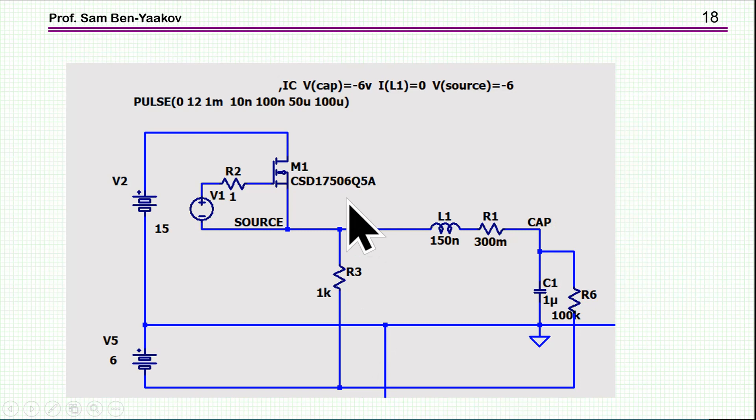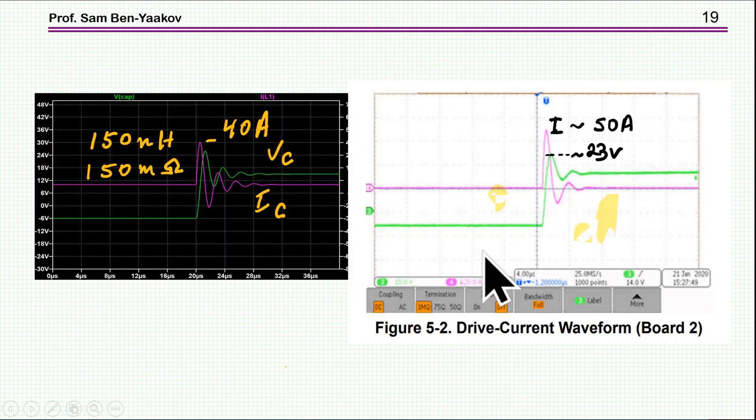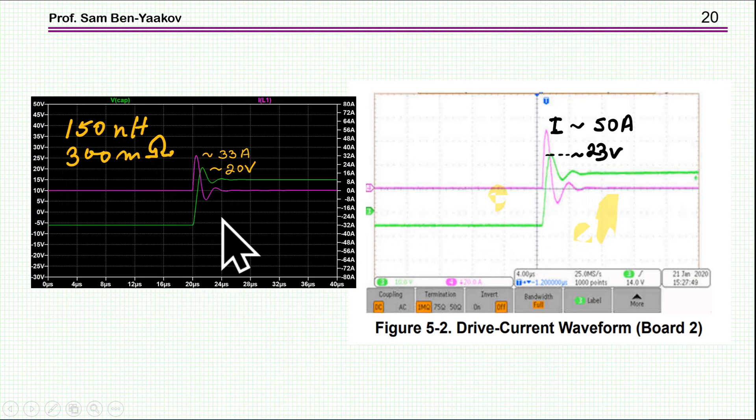So, to probe further into this issue, I've set up a simple LT SPICE simulation schematics. Here is 20 volts. Actually, I used here 15 volts already. And here is minus 6. This is pre-charge. And this is just for turn on. And I've put here a 150 nanohenry. And this is 300 milliohm is what I've found to match the plots that they have, the screenshot of the scope.